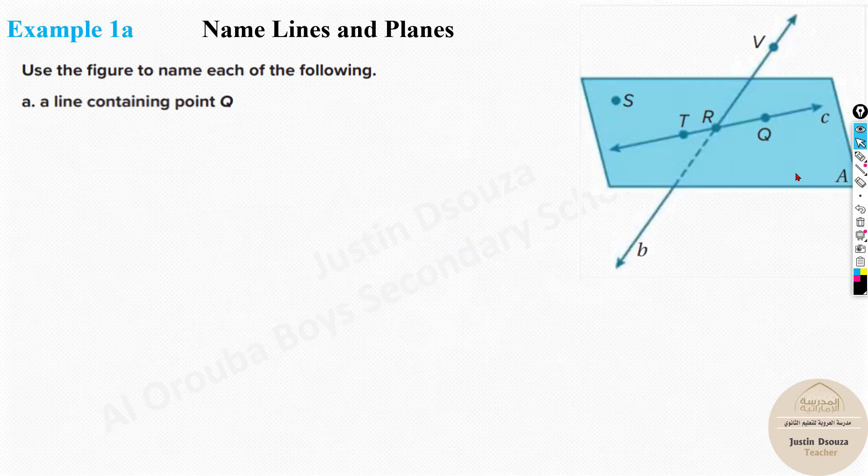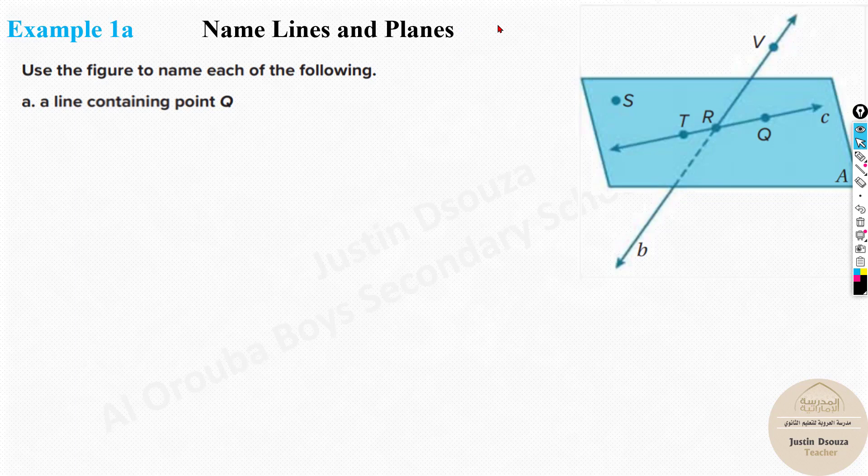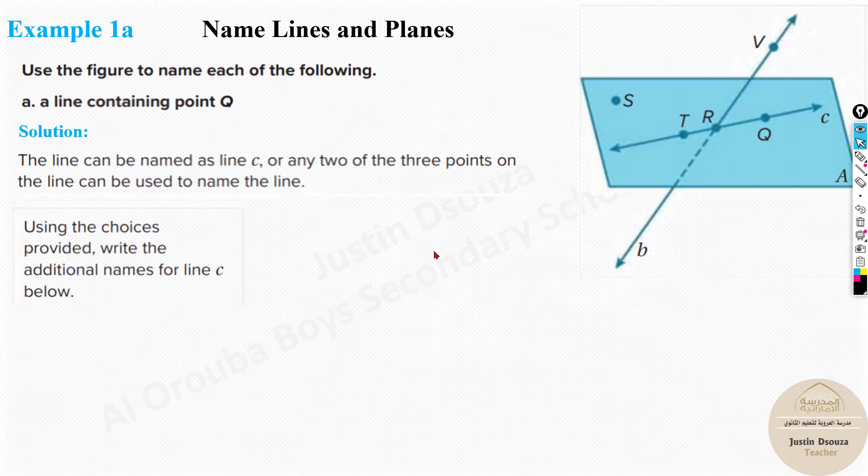And over here, we have the first problem. We have to use the figure and name each thing. What they ask is a line containing point Q. Over here, the point Q is in this line. You can call it as line C or line TQ, anything. So the line C is the answer. It's very simple.